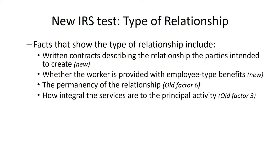Although there are situations where classification can be difficult, in the chiropractic office the worker should almost always be categorized as an employee, and the business owner needs to file and pay the appropriate taxes accordingly. The real key is: whenever there is doubt or it is a close call, the safe thing to do is always to categorize the worker as an employee and pay those taxes to the IRS.